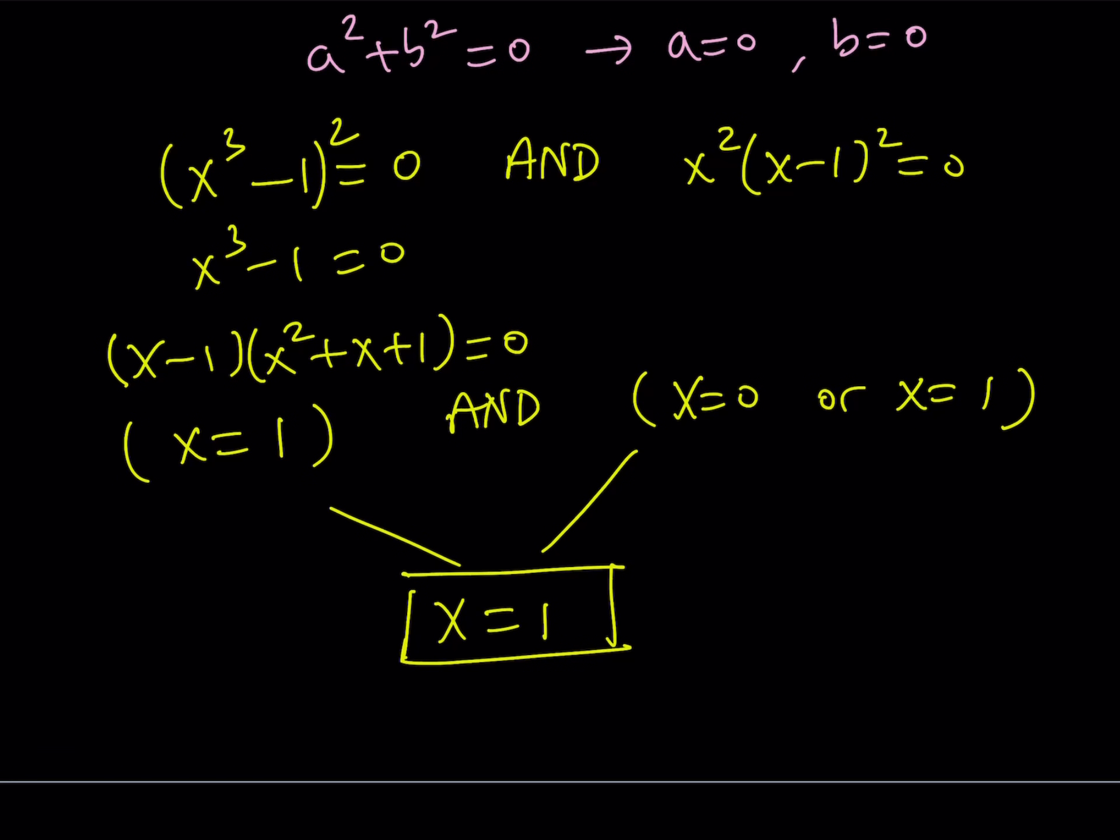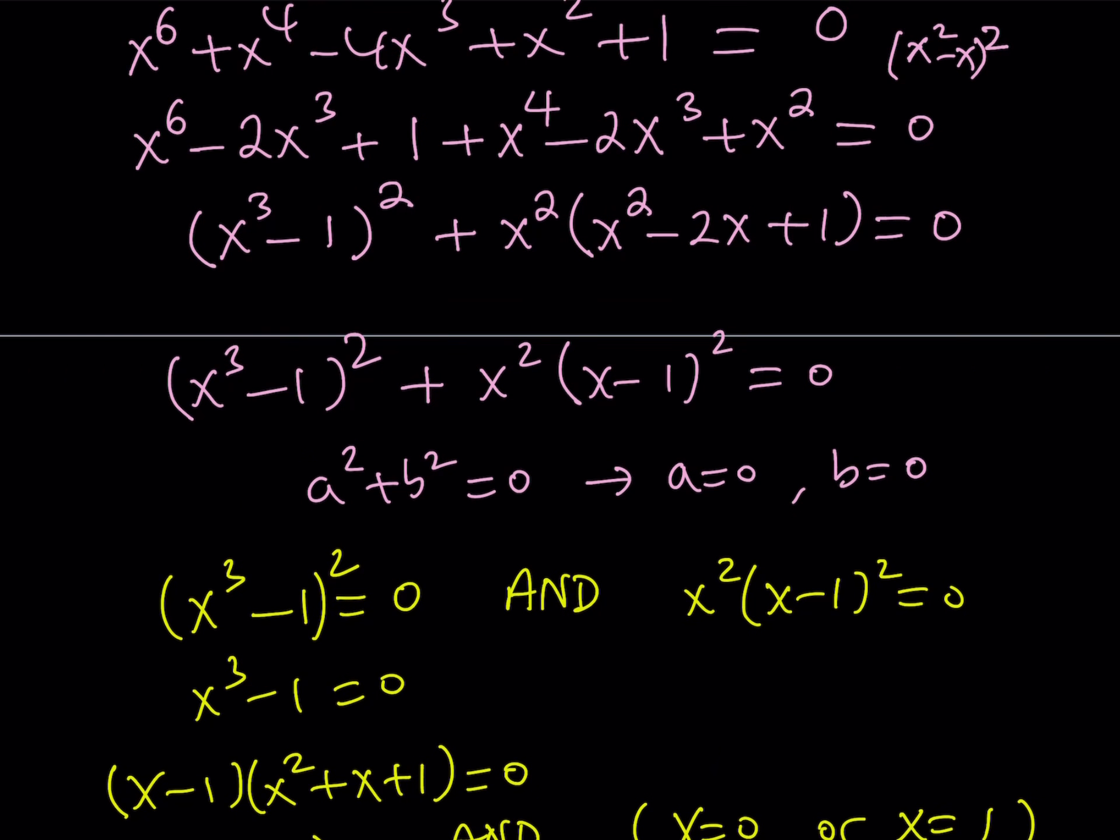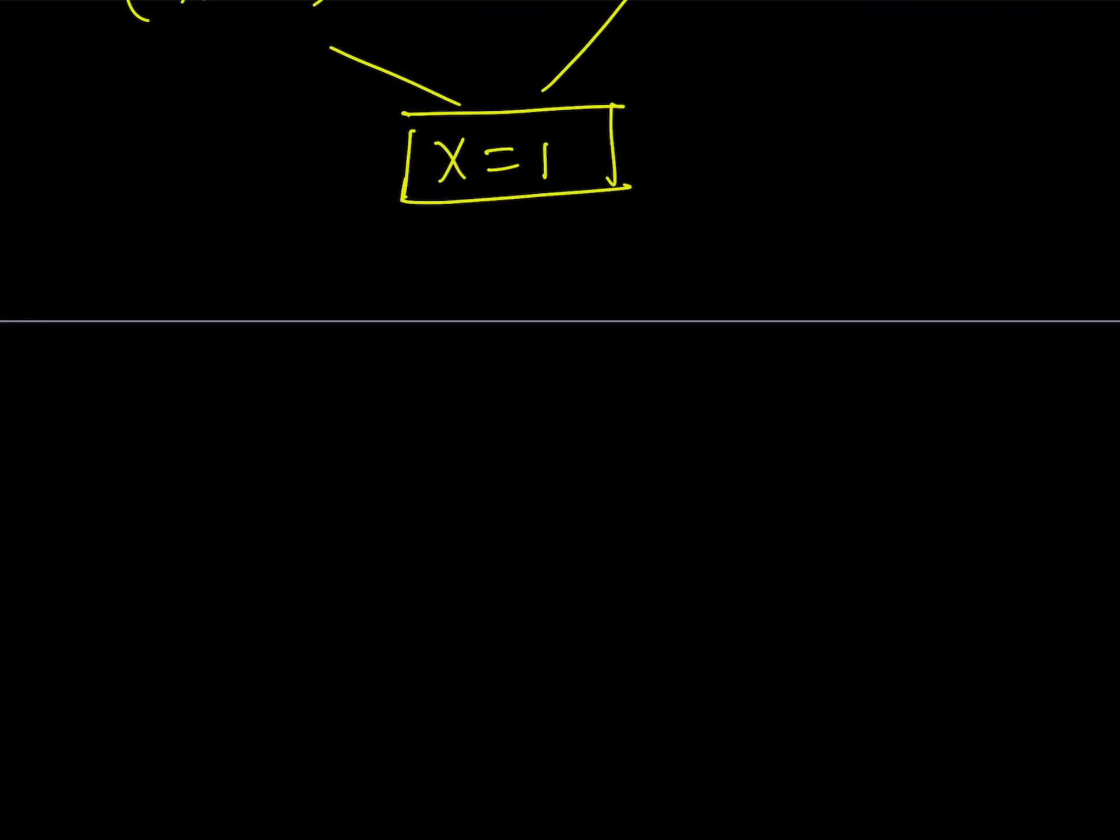So, we get one solution from here, and that is x equals 1. It's kind of interesting, right? Okay, great. So, x equals 1 is going to satisfy this equation. That's the only solution. Looks like it. Now, let's go ahead and take a look at the second method.